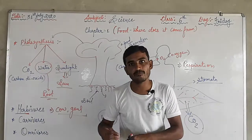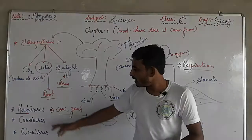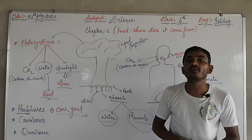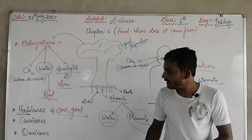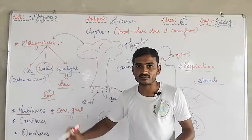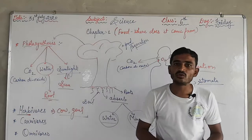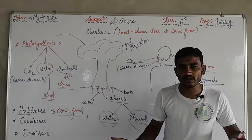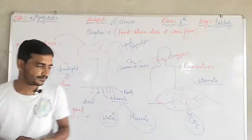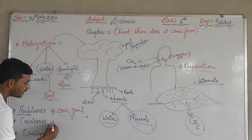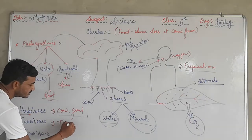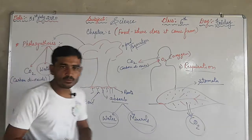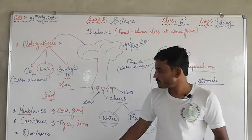Carnivores means that type of animal who eats the flesh of other animals. They do not eat plant products. Examples of carnivores are tigers and lions. These are called carnivores animals.